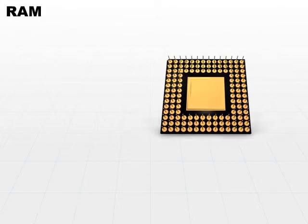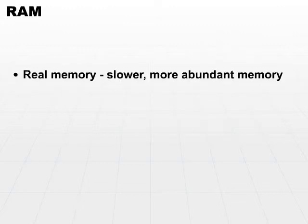As wonderful as the CPU is, he can only do his job if he's able to communicate with the outside world. A discussion of buses, bus widths, and speeds is beyond the scope of this section, but we do need to understand that the CPU communicates to the outside world primarily with real memory. Now, real memory is much more abundant memory, but far, far slower. It is the place where the CPU fetches most of its data and puts a lot of its data when he's finished executing these very tight instructions.